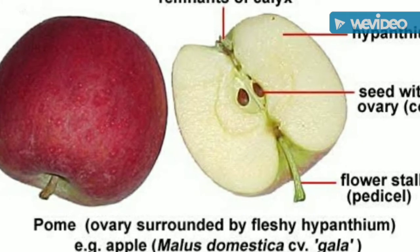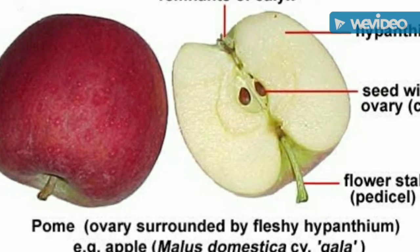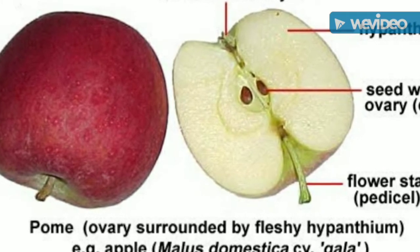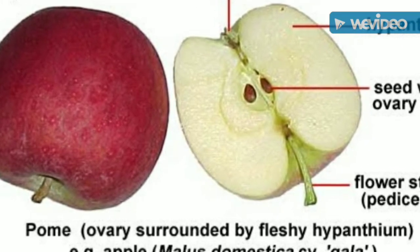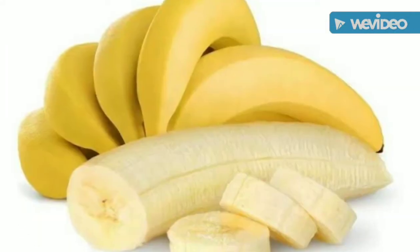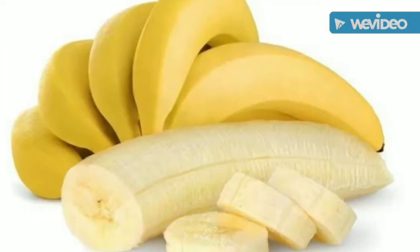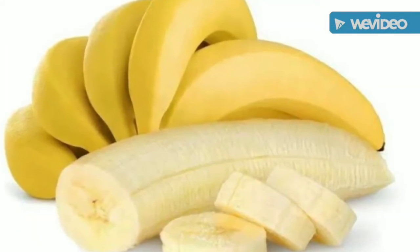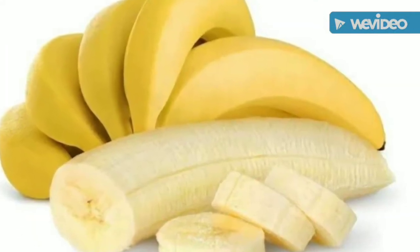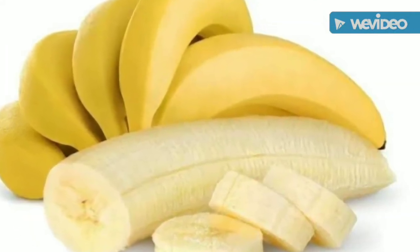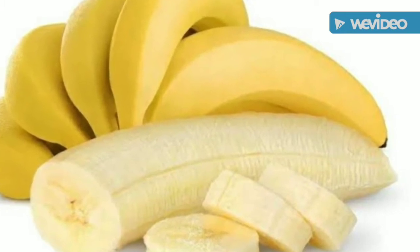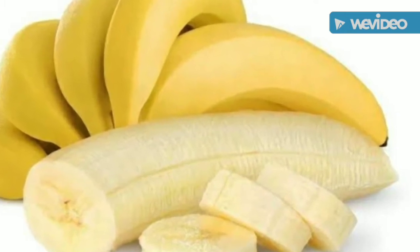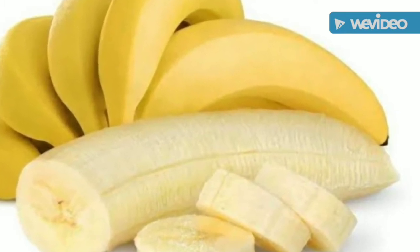This one is a false fruit where the thalamus is modified into fleshy and edible tissue. Another one is a parthenocarpic fruit, developed from an unfertilized ovary, because it does not consist of seeds — no seeds are present.